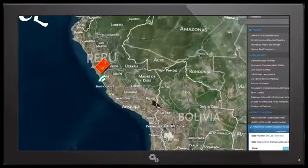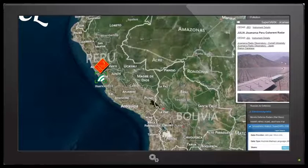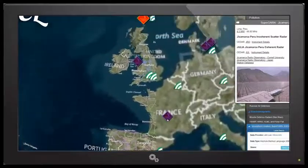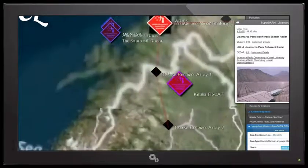Down here, Jicamarca, Peru. That is actually a SuperDARN, which you can see here, big field of antennas, and it has a 4.5 megawatt output. And finally, we'll just skip Sura and go to Norway, and you can see up here in Norway, the Tromso Array.